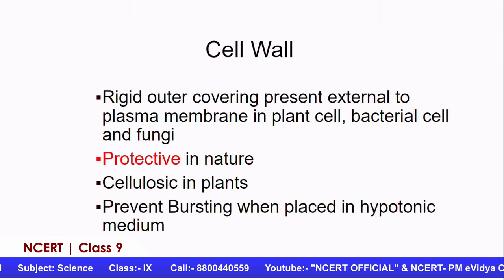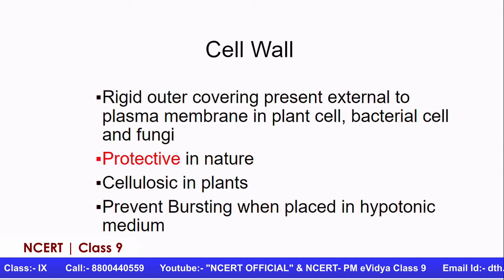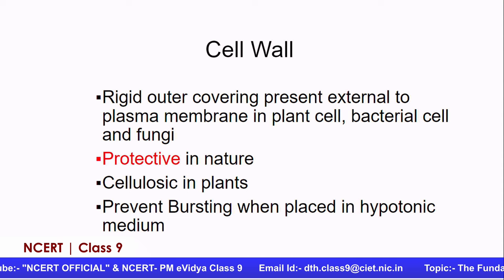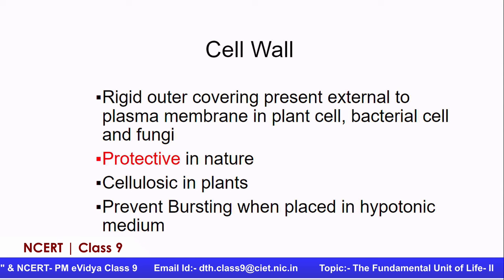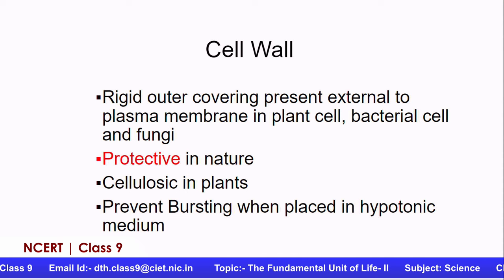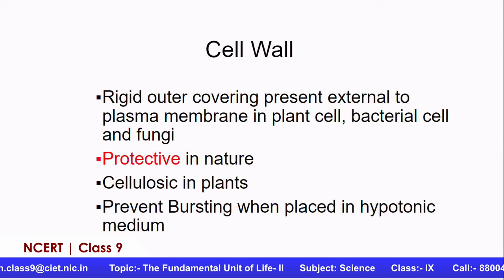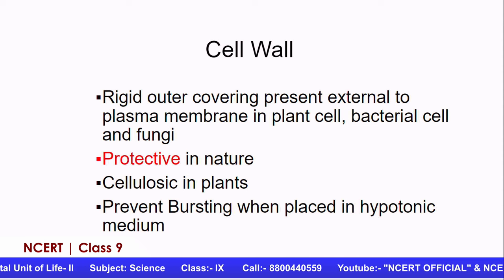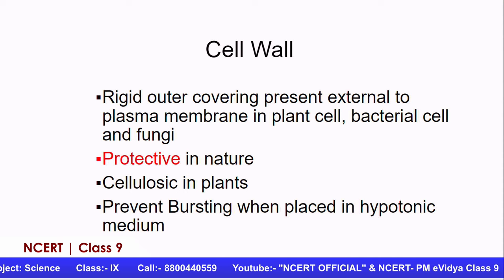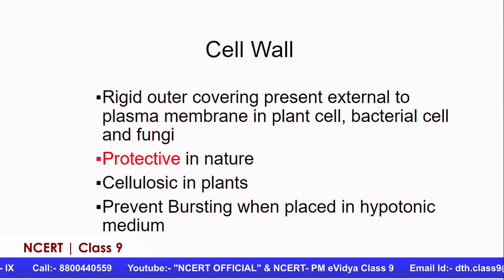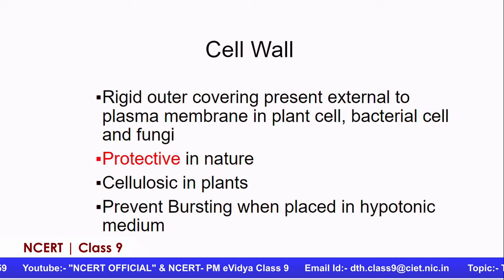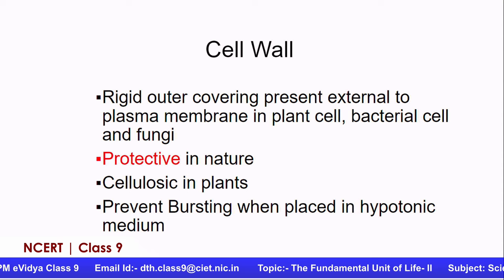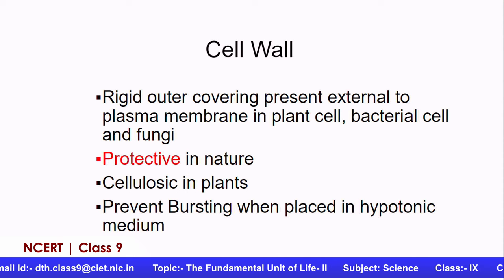Last time when we were talking about plasmolysis, we found that in plasmolysis there is a creation of a gap between the cell wall and cell membrane, and that happens in the plant cell. The cell wall is a protective covering present only external to the plant cell — it is not present in the animal cell. It is cellulosic in nature and prevents the bursting of the cell when you place the plant cell in a hypotonic medium. If you place the animal cell in the hypotonic medium it will burst, but the plant cell will remain as such.